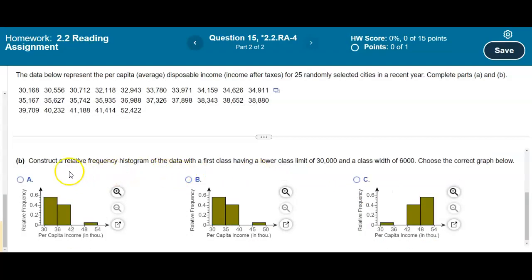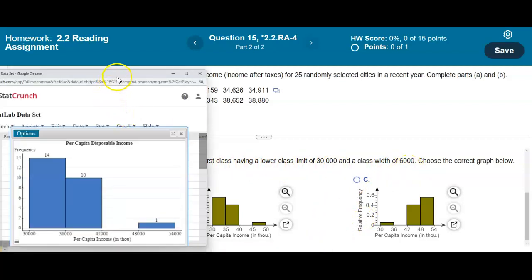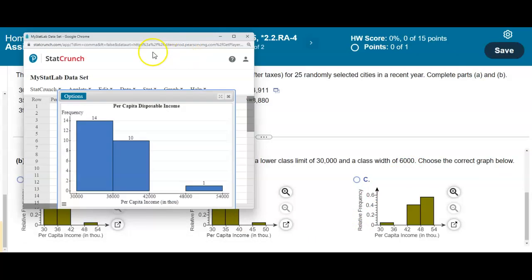Now, the next question is to construct a relative frequency histogram of the data with a first class having a lower class limit of $30,000 and a class width of $6,000. So again, if we just come up here and open up our StatCrunch, we can either go and do that again, or all we need to do is where it says options, just come up to options, and then select edit.